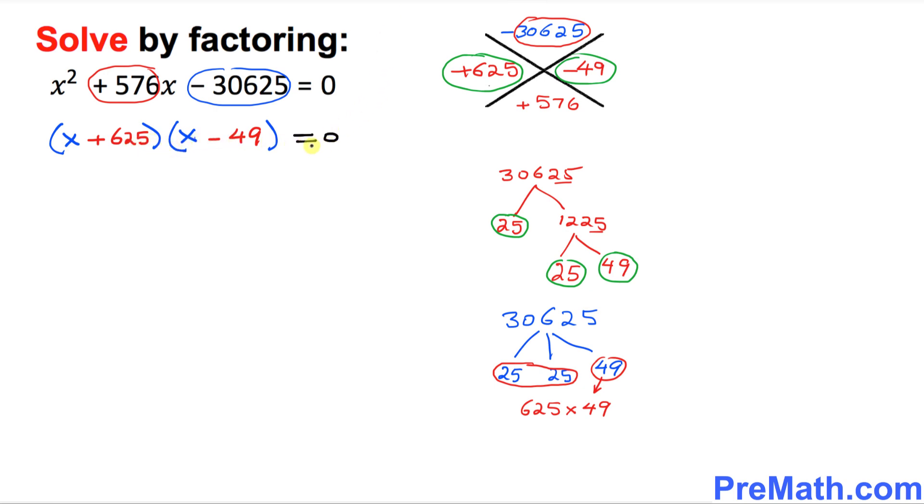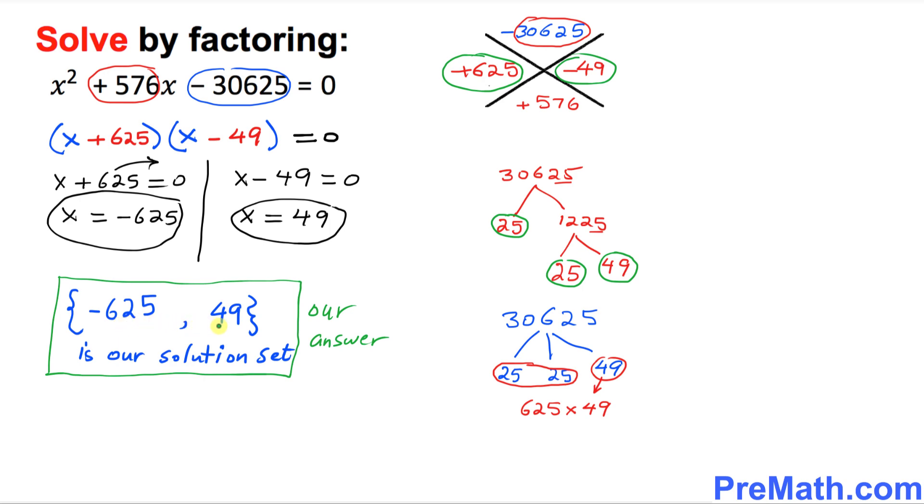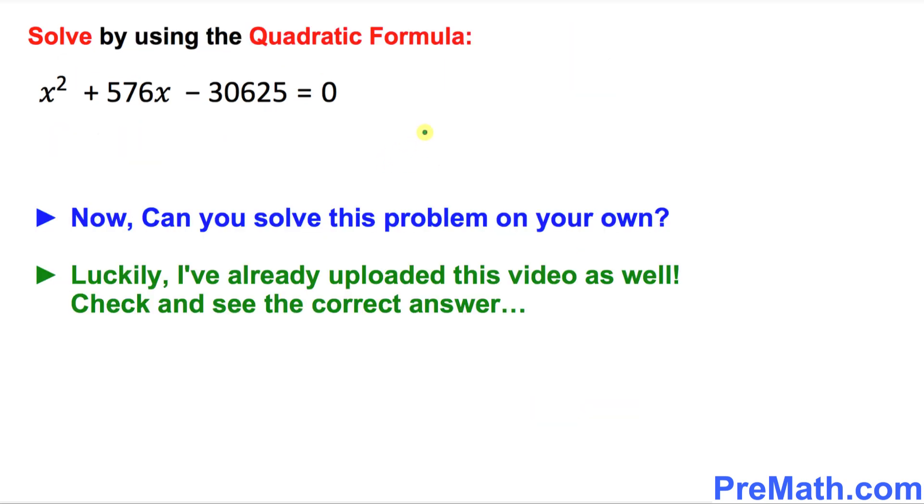Now since we have two factors equal to zero, you can separate them, you can split them up. I'm going to put down x plus 625 equal to zero, and x minus 49 equal to zero. Here, if you move this side, so x equals to negative 625 is one of our solutions. And here, x equal to positive 49 is another solution. Hence, negative 625 and positive 49 is our solution set, and that is our answer.